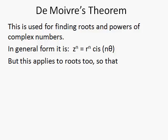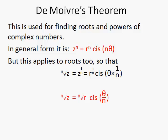It applies to roots as well as powers, and the nth root of a number is the same as raising that number to the power of 1 over n. So we raise the modulus to 1 over n and multiply the argument by 1 over n. In more common language, if we want the nth root of z, we take the nth root of the modulus and divide the argument by n. So we have two forms of De Moivre's Theorem: one applying when you're raising to a power and the other when you're finding roots.